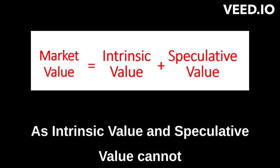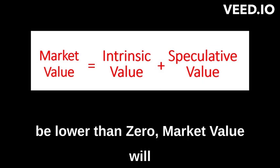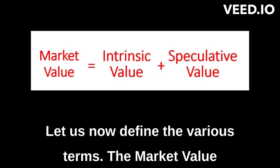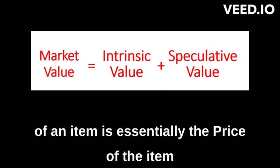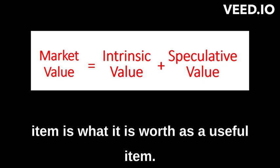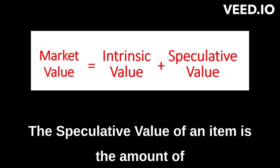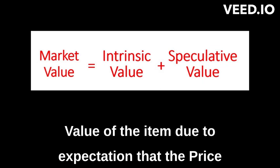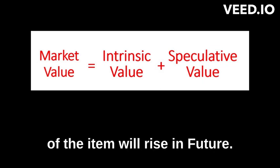As intrinsic value and speculative value cannot be lower than zero, market value will never be lower than zero. Let us now define the various terms. The market value of an item is essentially the price of the item in a free market economy. The intrinsic value of an item is what it is worth as a useful item. The speculative value of an item is the amount of money someone else is willing to pay above the intrinsic value of the item due to expectation that the price of the item will rise in future.